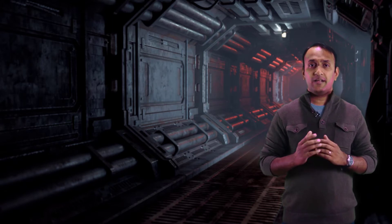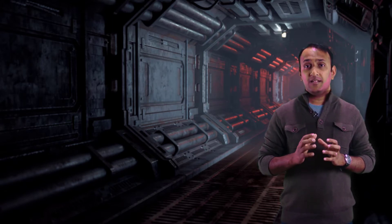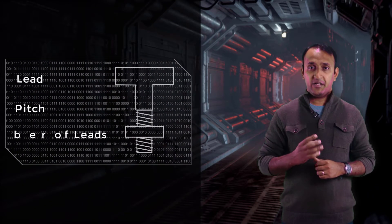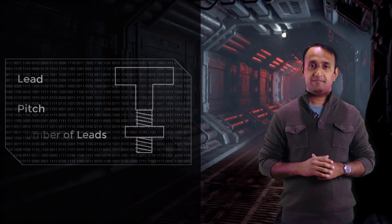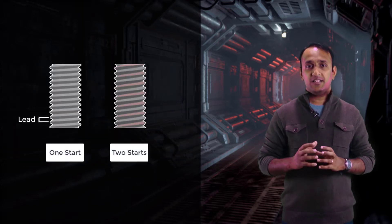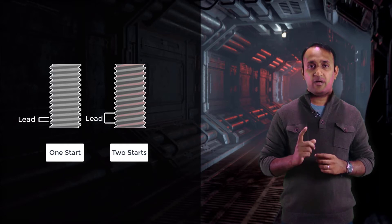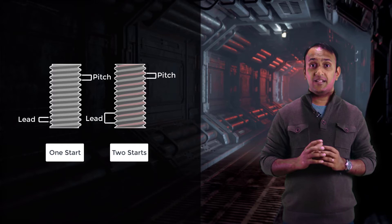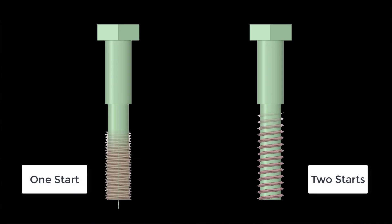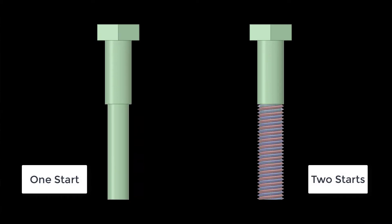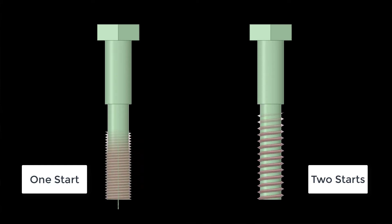The threads of the bolt are where the loads are transferred, and their dimensions are crucial to designing bolted joints. Three important terms related to threads are the lead, the pitch, and the number of leads. Lead is the distance advanced by the bolt along its axis for one full rotation. Pitch is the distance between the crests of two adjacent threads. Number of leads is the number of ridges that are wrapped around the bolt. Most bolts have one lead, in which case the lead and pitch are equal.